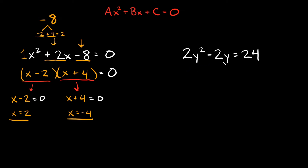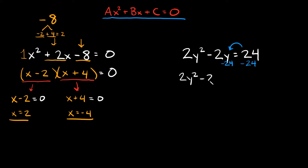Now let's go to the next one: 2y² - 2y = 24. The first thing you notice is it's not in standard form — we don't have a zero on the right side, we have 24. So I need to subtract 24 from both sides, giving us 2y² - 2y - 24 = 0.